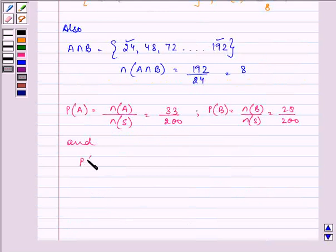And probability of their intersection is number of elements in their intersection upon number of elements in sample set, 8 upon 200.